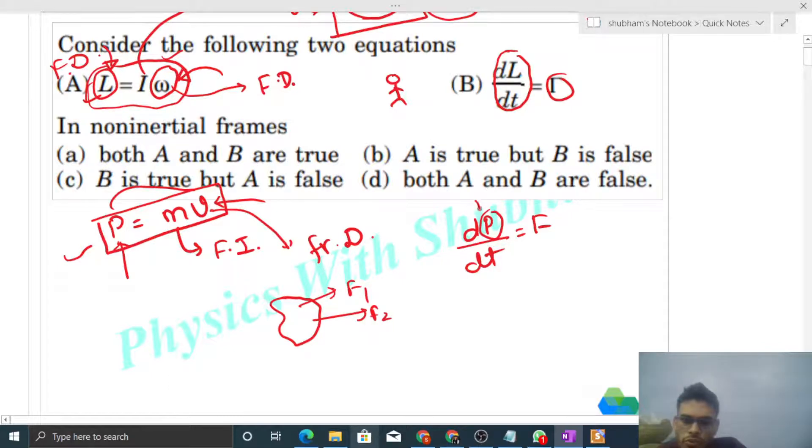What is P, linear momentum? Mass into velocity. Mass is constant, so it comes out. What remains? Mass into rate of change of velocity. What is this? Acceleration. Mass into acceleration. What is mass into acceleration? That is the net force acting on the body. This is not equal to individual force. Mass into acceleration is the resultant of all forces.